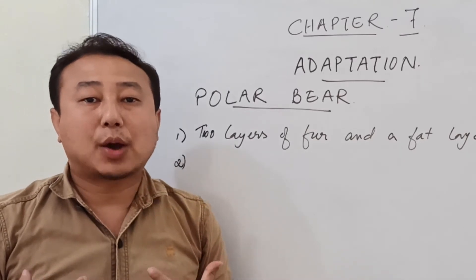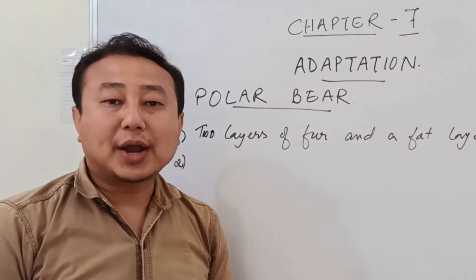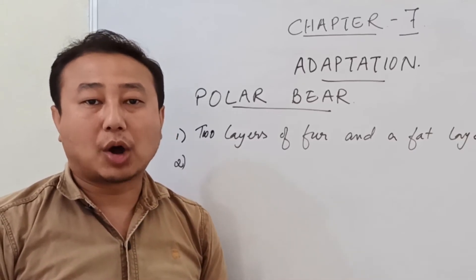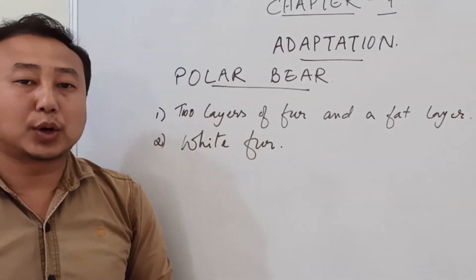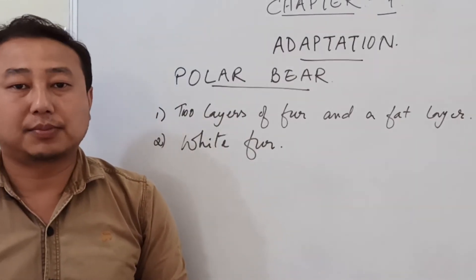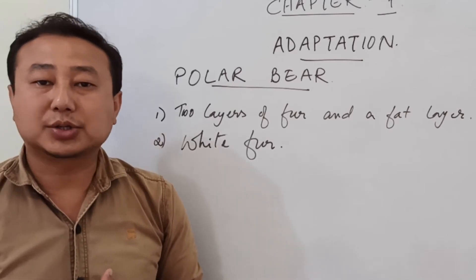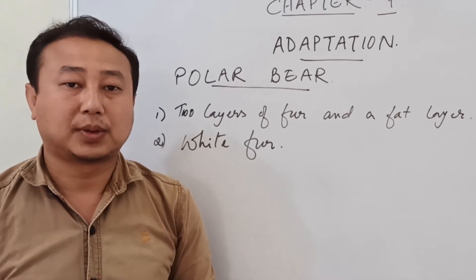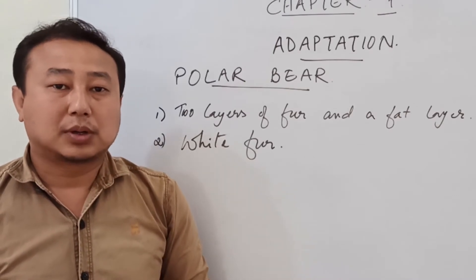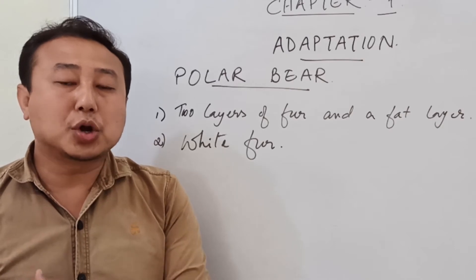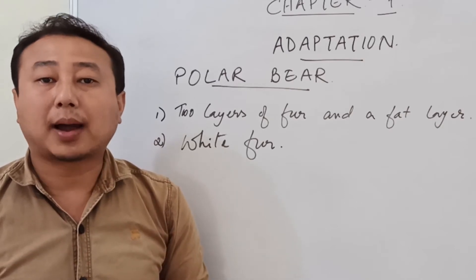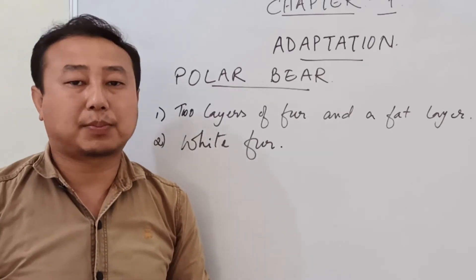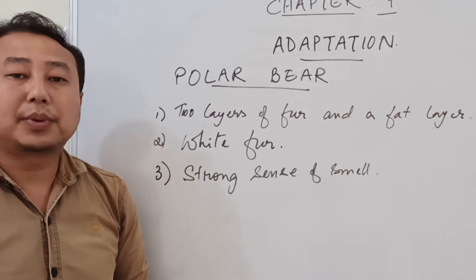The next adaptation found in the polar bear is the color of its fur. The fur of the polar bear is white, which helps it match with the white background of the snow. This camouflage means the polar bear is not easily seen by its prey, allowing it to go near the prey and hunt easily.